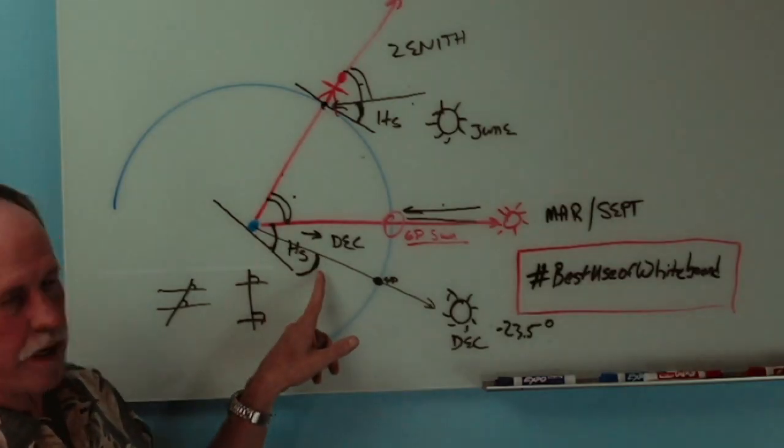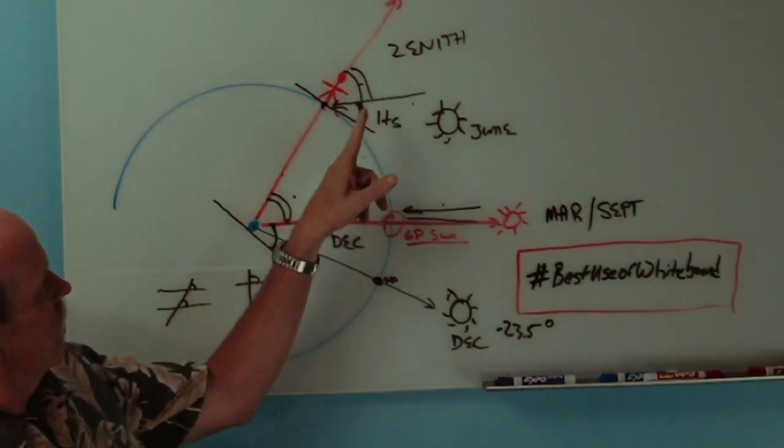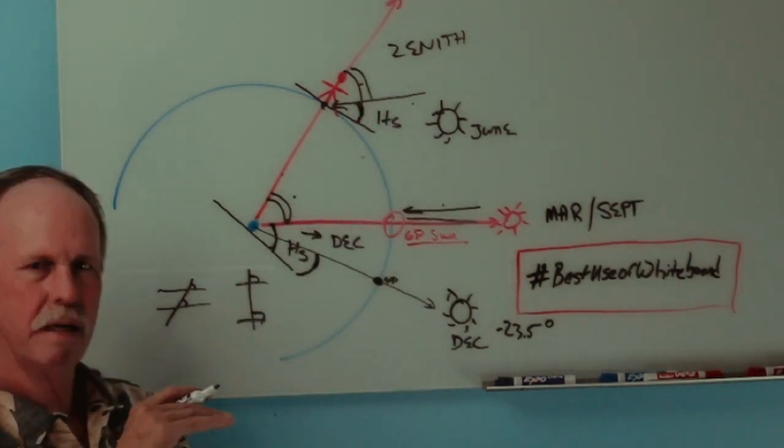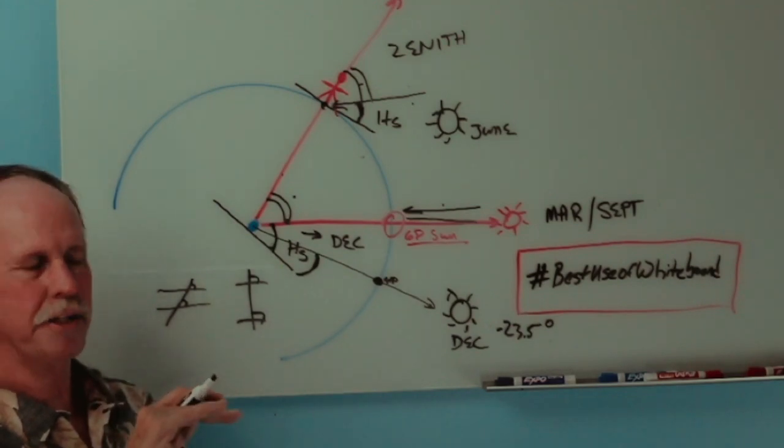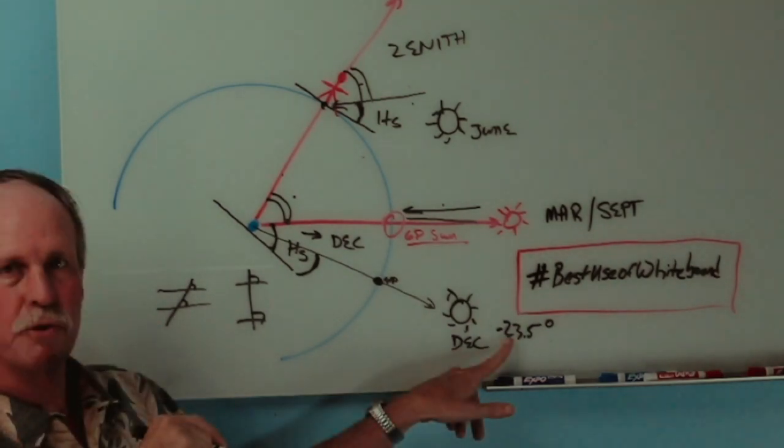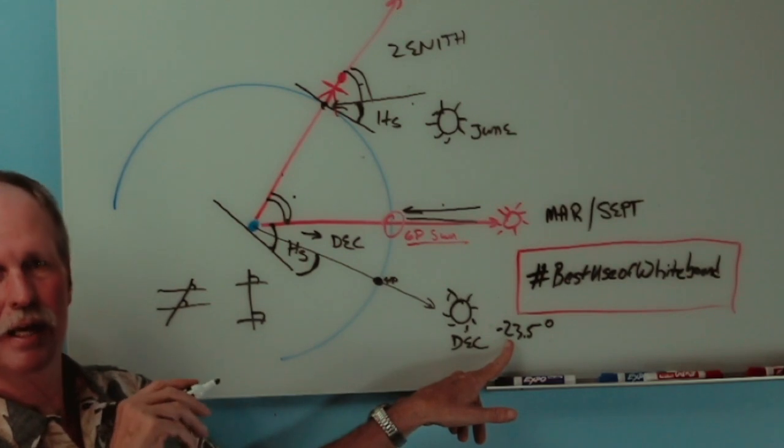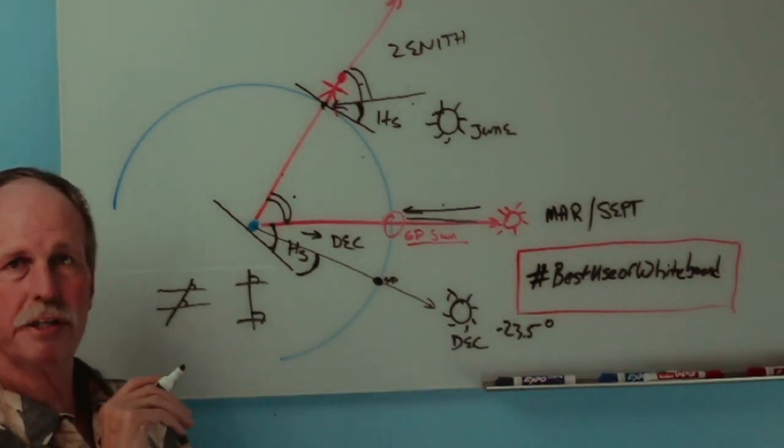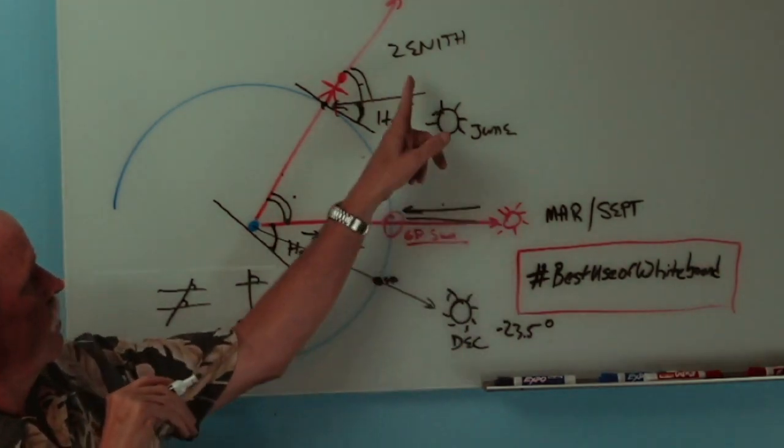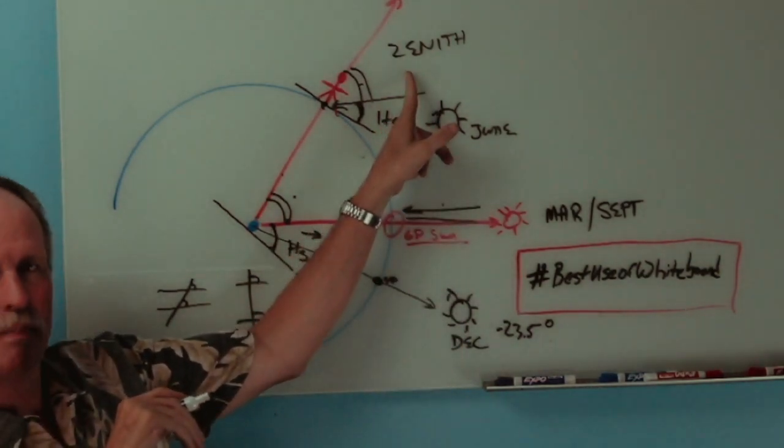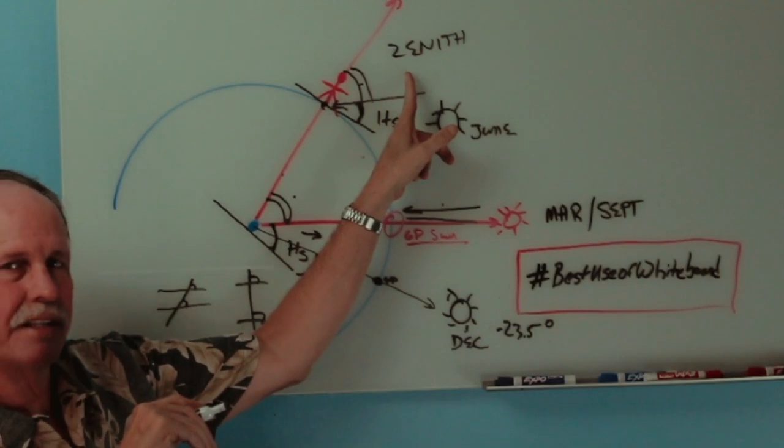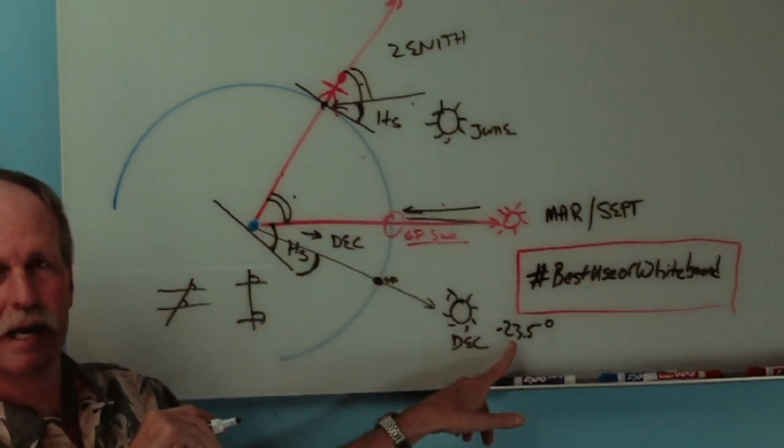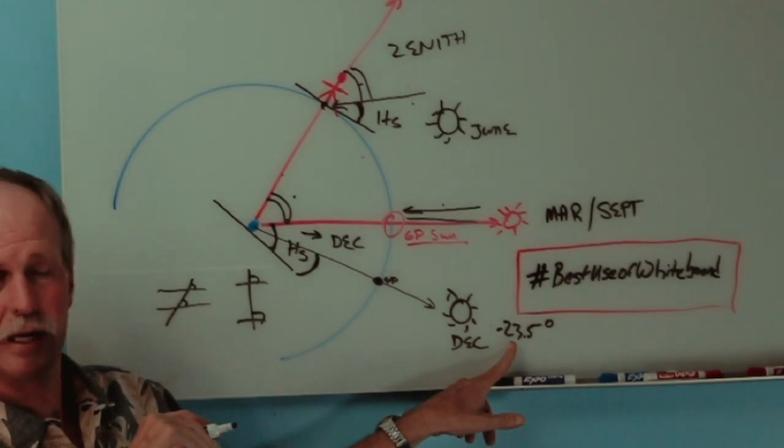We want this angle. Well, that angle is called the declination of the Sun because the Sun is below the equator. And in this case, at the December solstice, it would be negative 23.5. So, we're going to measure this distance and we're going to subtract it from 90. And that will give us a number that is larger than our latitude. Why? Because we have to subtract the declination.